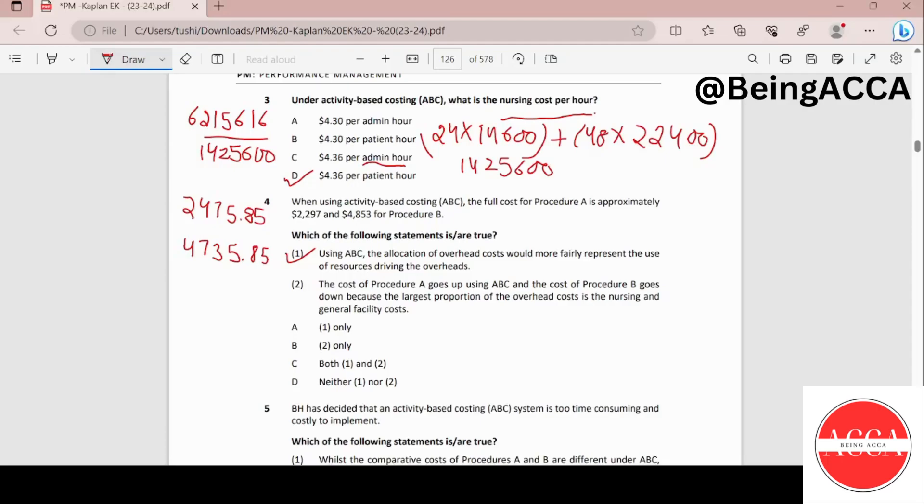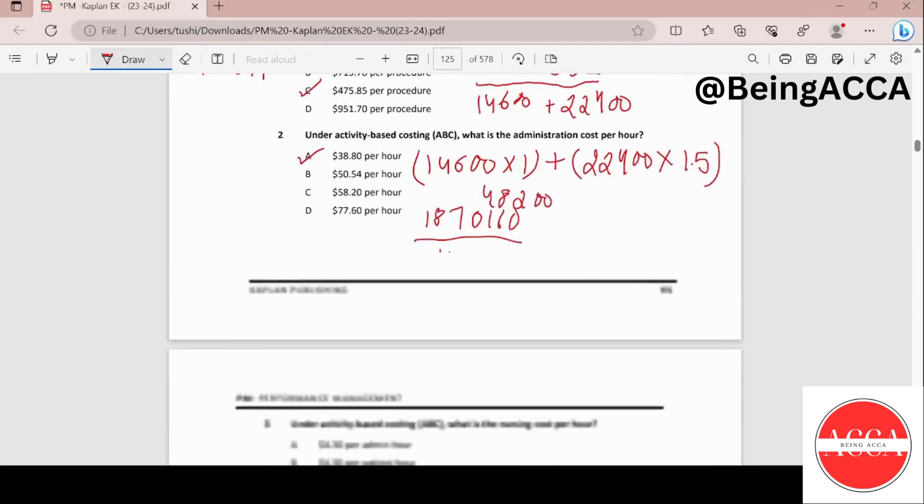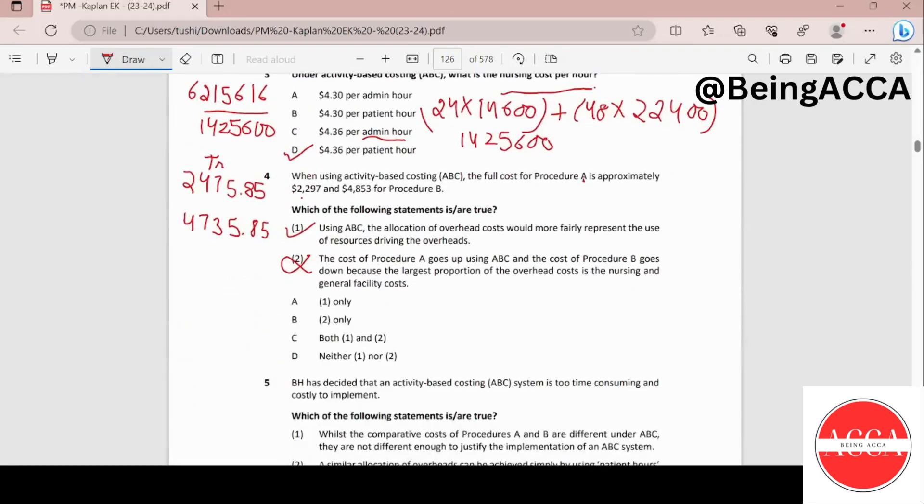Moving on to the second statement. It says that the cost of procedure A goes up by using ABC and the cost of procedure B goes down. Let's see, this was the traditional method that we were following and this is the ABC costing that they have provided us. The cost for procedure A has actually reduced whereas the statement says the cost of procedure goes up. So this makes the statement entirely wrong. The reason is that most of the overhead costs are actually driven by number of patient hours. So the fact that procedure B takes double hours than procedure A, that is why the entire difference is coming. So my statement 2 is not correct and hence I get my correct answer as option A.